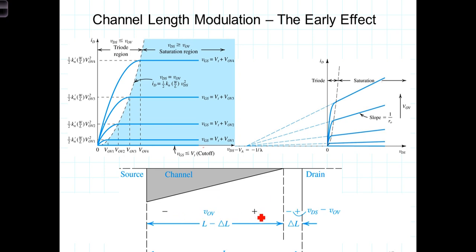So we still have the overdrive voltage dropping across the channel, but it leaves a depletion region here. The depletion region, which consists of no unbound carriers, has a voltage drop across it equal to the amount that VDS exceeds the overdrive voltage.